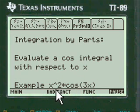And we're going to do this example right here, x squared times cosine of 3x, which takes 2 integration by parts calculations to get the answer. I'll take you through that.